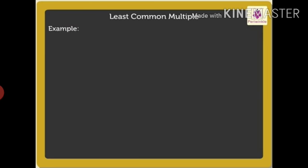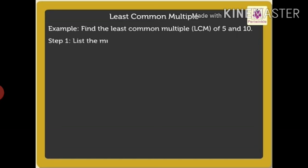To understand in a better way, let us solve one example. Find the least common multiple of 5 and 10. We will follow a three-step process to find the least common multiple. Step 1: List the multiples of all the given numbers.